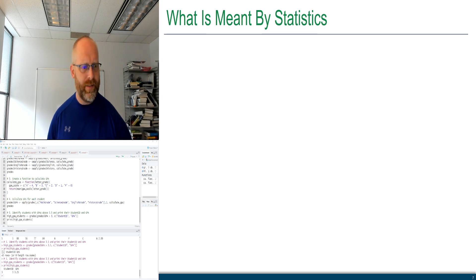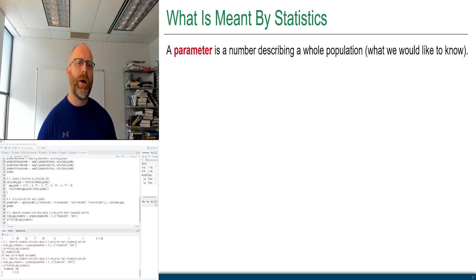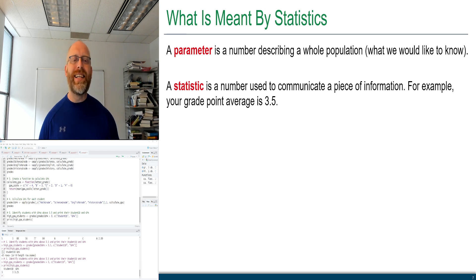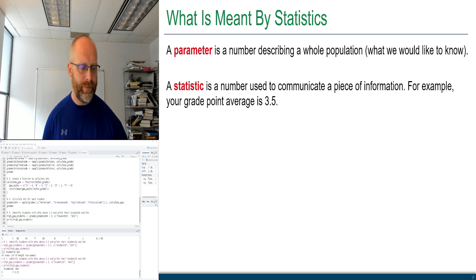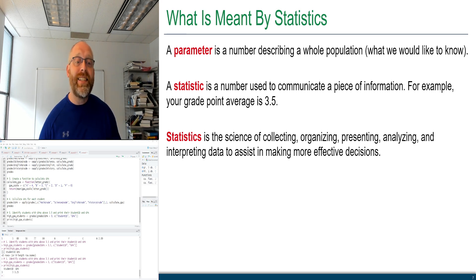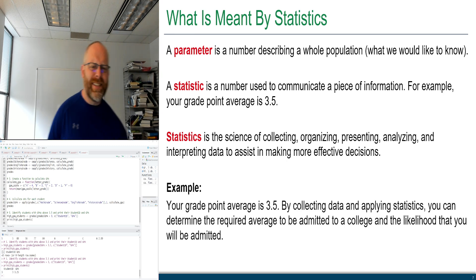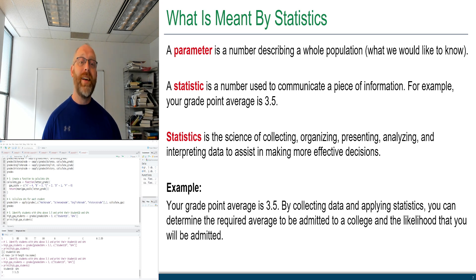A parameter is any number describing a whole population — this is what we would like to know and typically do not. A statistic is a number used to communicate a piece of information about a sample. Statistics is the science of collecting, organizing, presenting, analyzing, and interpreting data to assist in making more effective decisions. For example, your GPA of 3.5 is a statistic — we can use sample statistics to make educated guesses about population parameters.